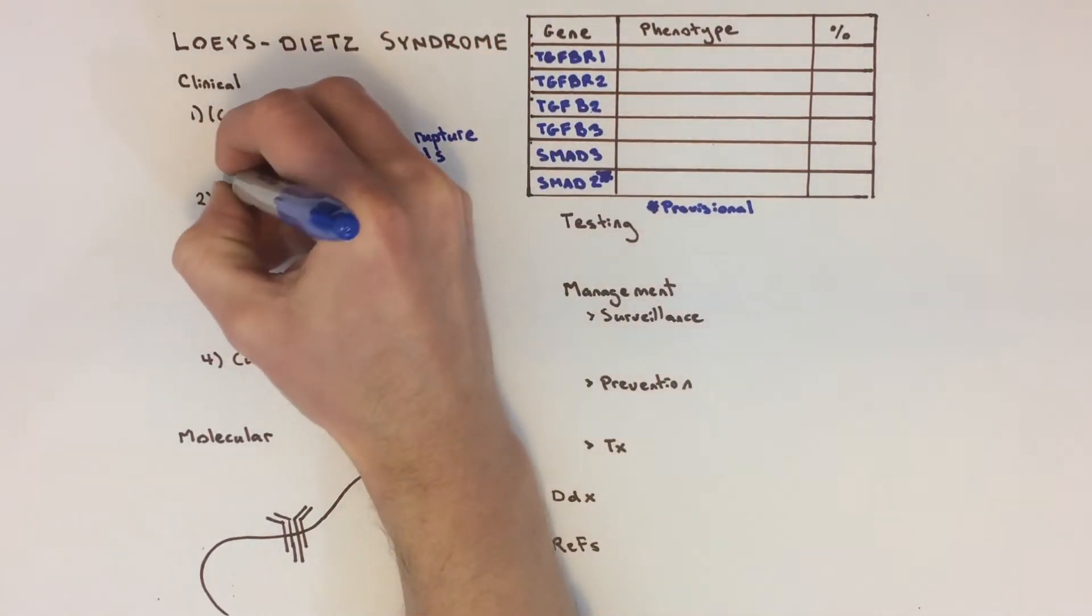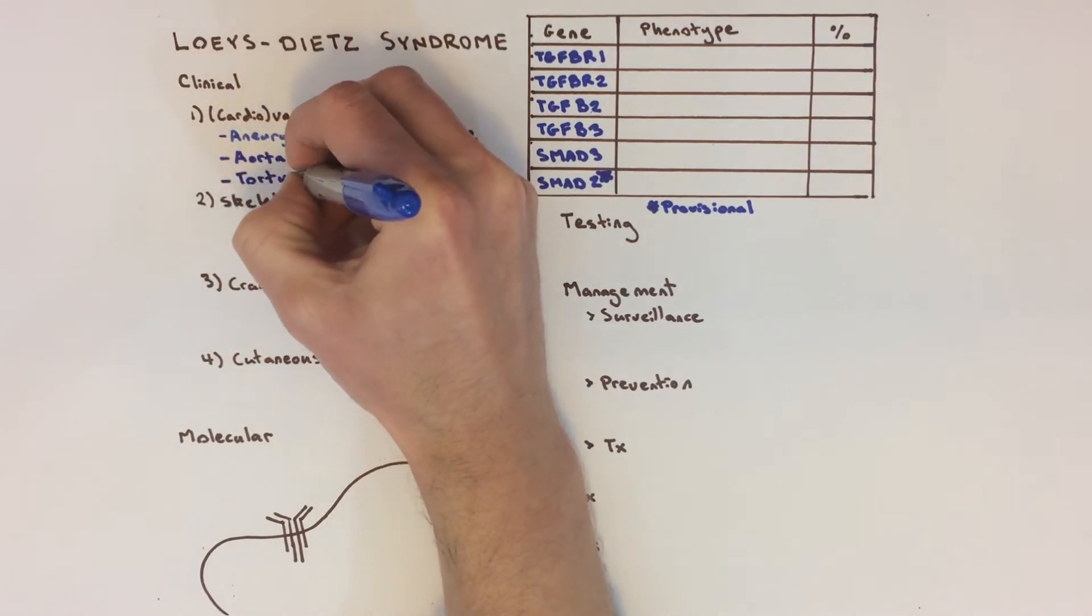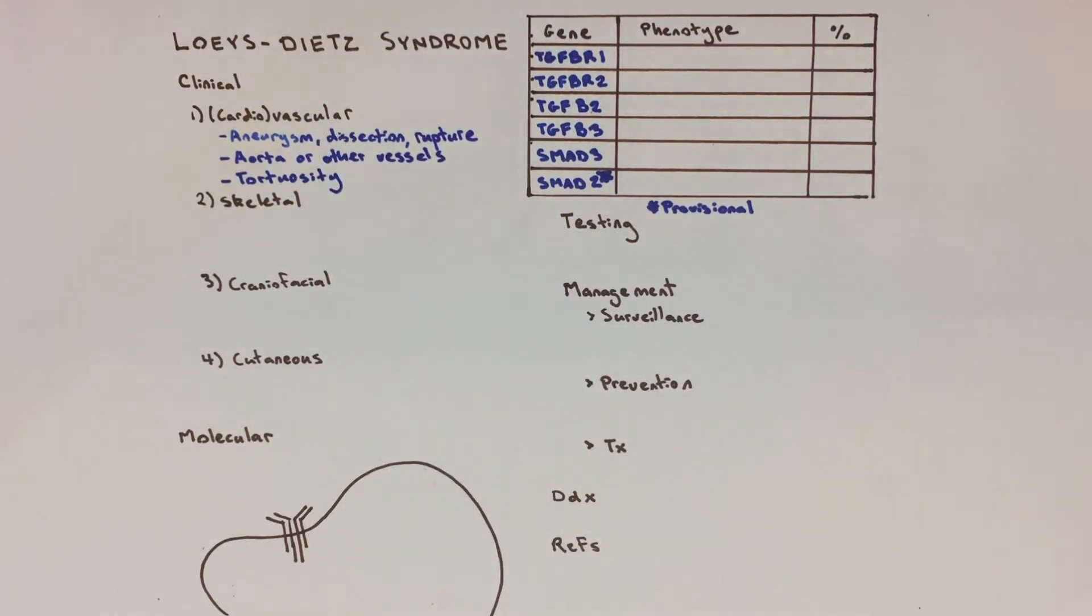Loeys-Dietz patients can have cardiac features as well, including mitral valve prolapse, patent ductus arteriosus, atrial septal defect, and bicuspid aortic valve.